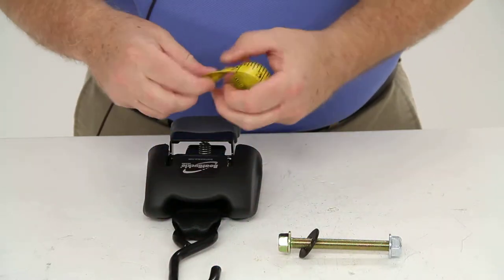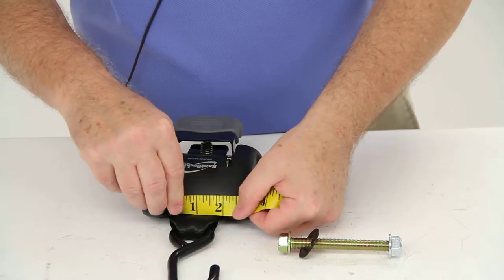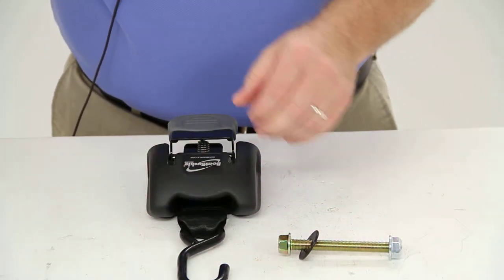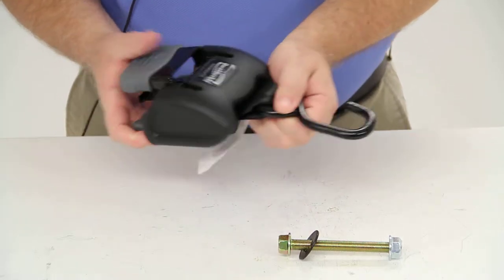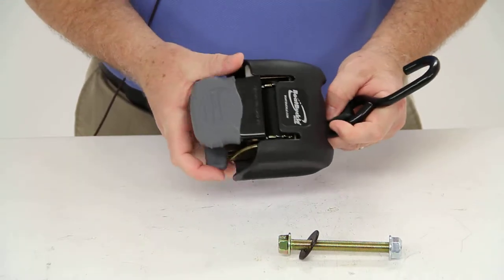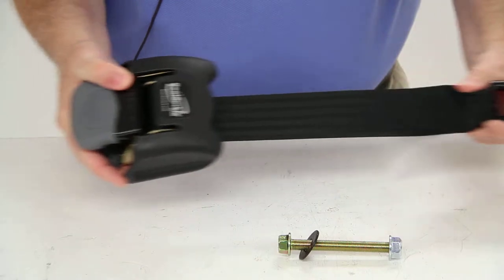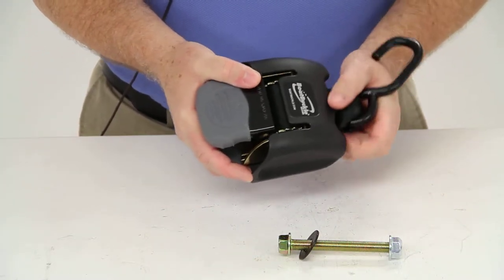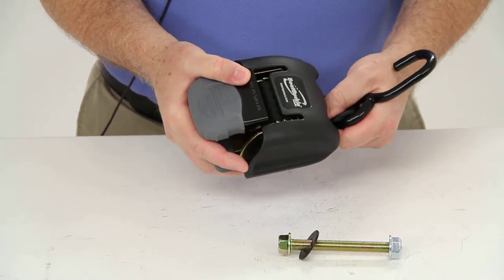The dimension on the strap is 2 inches wide and 43 inches long. It has a maximum load strength or breaking strength of 2,500 pounds. The actual safe working load limit would be one-third of that, which is 833 pounds.